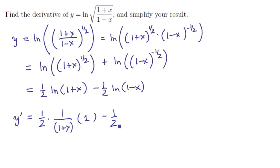So then we have the minus 1 half comes along for the ride. The derivative of ln of blank is 1 over blank times the derivative of blank. The blank is 1 minus x, and the derivative of that is minus 1.